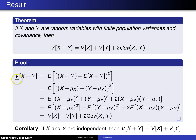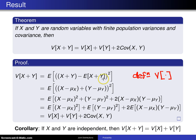The variance of x plus y. The variance operator — this step will be done by the definition of the variance operator. You recall that the variance of any random variable is the expected value of that random variable minus its mean, squared. So in this particular case, the variance of x plus y is the expected value of x plus y minus the mean of x plus y, squared.